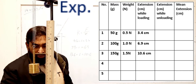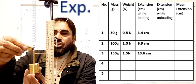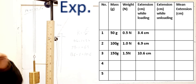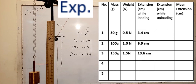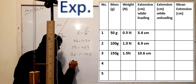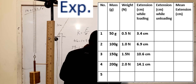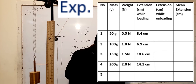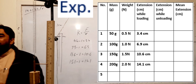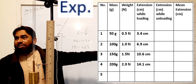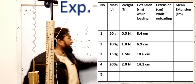The fourth mass of 50 grams is now suspended, making the total 200 grams. Let it stop moving before observing — that is a precaution for the experiment. The reading is 15.1 centimeters; 15.1 minus 1 equals 14.1 centimeters. So the extension for 200 grams is 14.1 centimeters. This completes the loading phase.